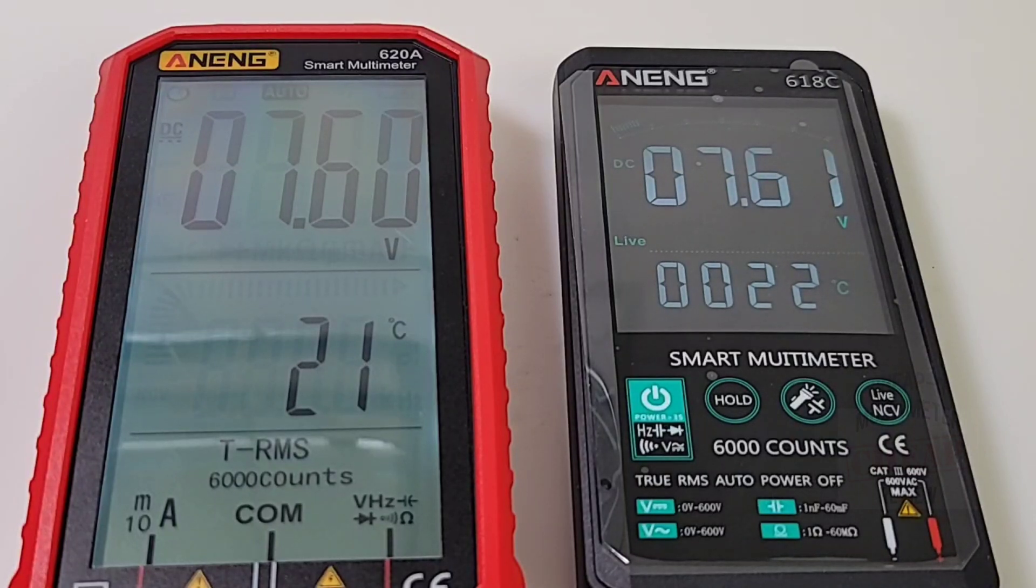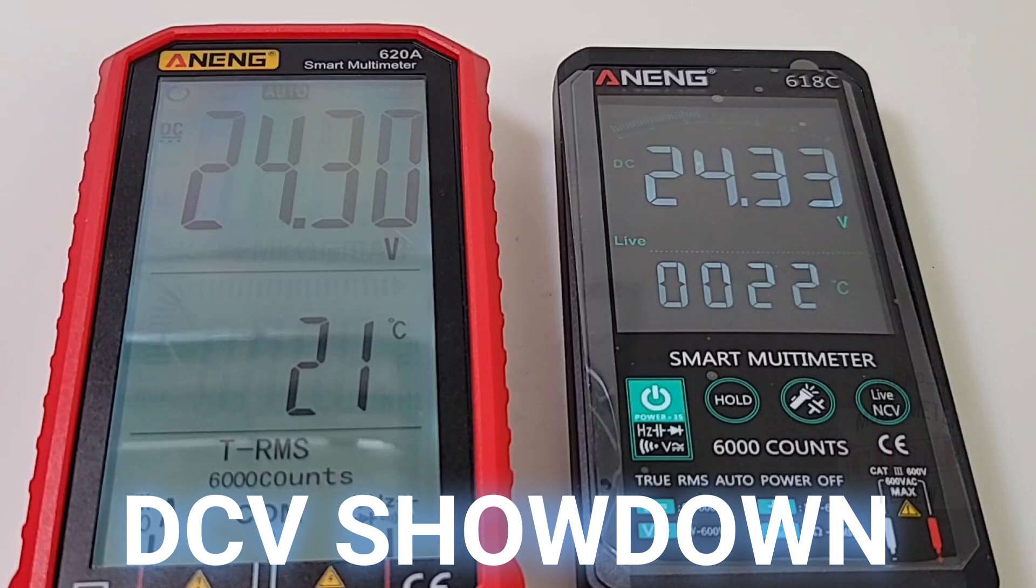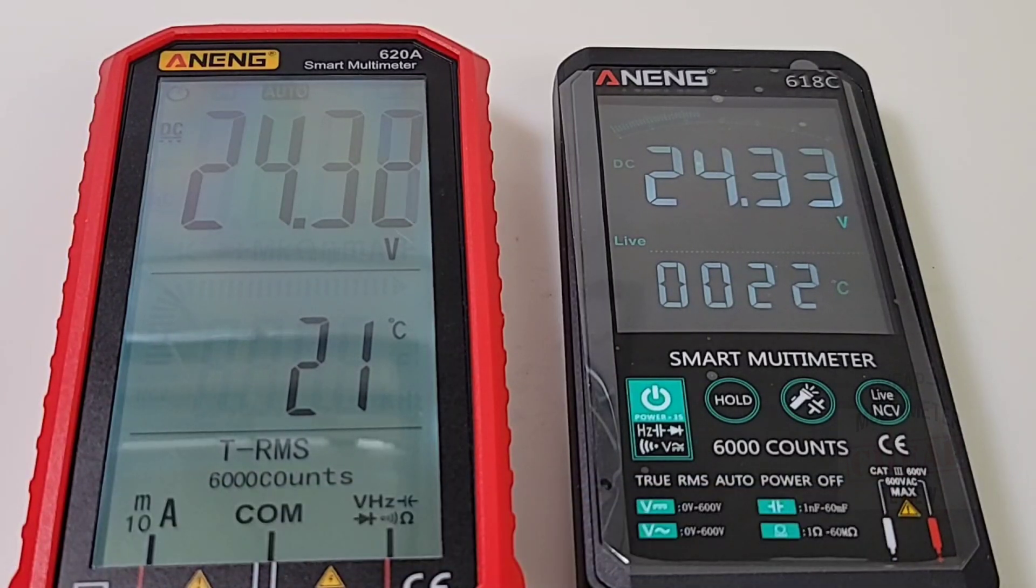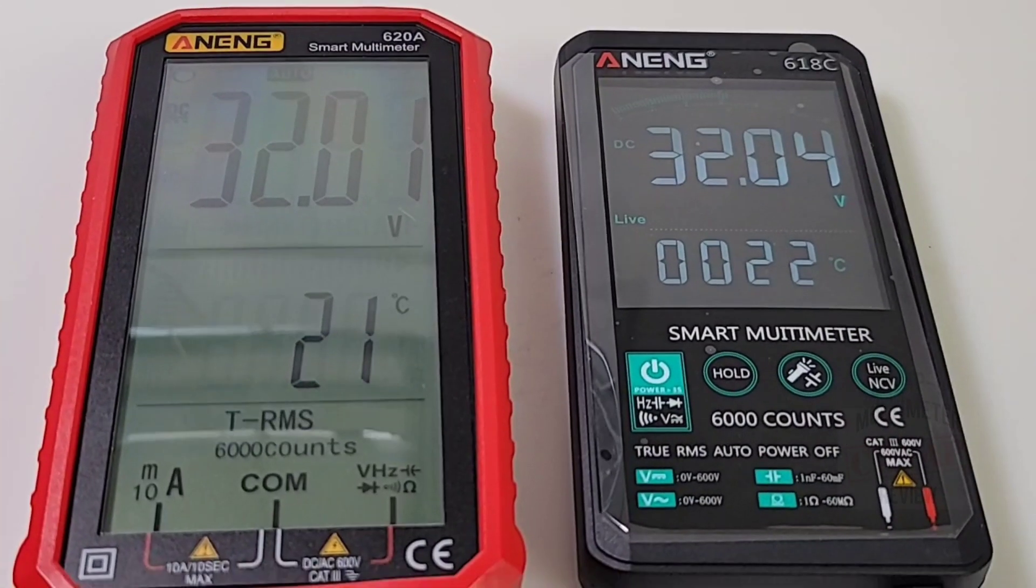Higher, 24.3 is what we're sitting at, 24.30, 24.33, awesome. We're going to max it out right now, 32 volts even steven, 32.01 for the 620, 32.04 for the 618. Awesome, you can see that 620 is definitely a plus in the accurate department. 618C was not far behind but I'm going to give this one to the 620.